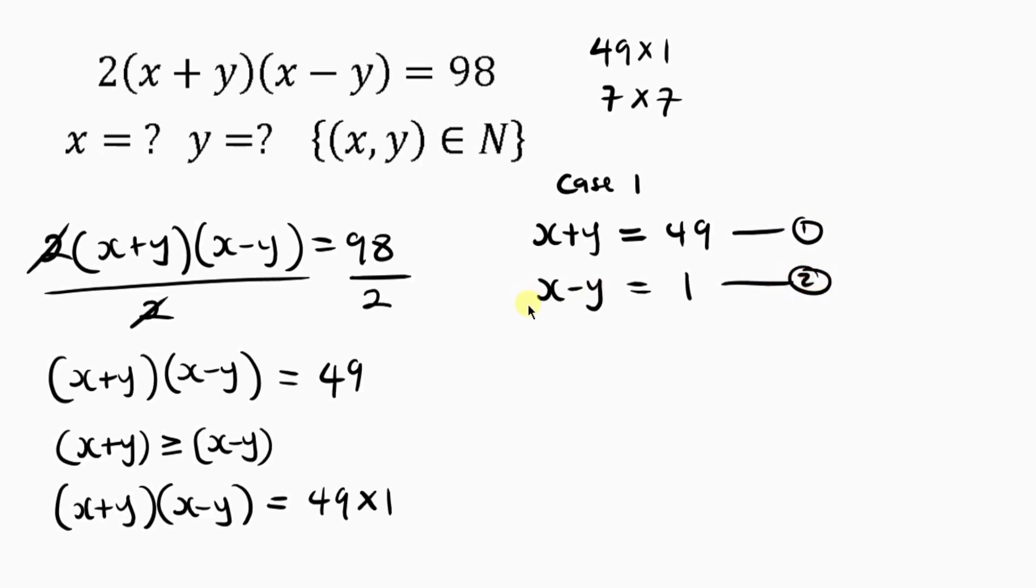So what do we do? We have to subtract equation 2 from equation 1. When we subtract, x minus x is gone. So y minus minus y. Remember, minus minus means plus. So y plus y gives 2y equal to 49 minus 1, which gives 48.